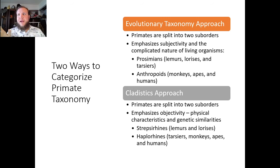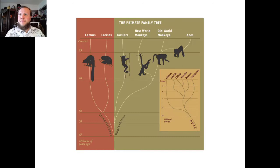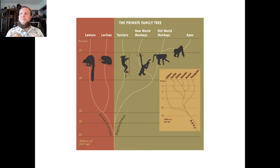There are two ways to categorize primate taxonomy. First is evolutionary taxonomy, which splits into two suborders — prosimians and anthropoids — to emphasize subjectivity. Second is cladistics, which we will be doing, splitting primates into two suborders based on physical characteristics and genetic similarities: strepsirrhines and haplorhines. Here's our family tree showing, according to the cladistics approach, how early the break-off is between strepsirrhines and haplorhines. You will be required to create something similar — a phylogenetic tree of our ancestry from apes to now — in short assignment three.